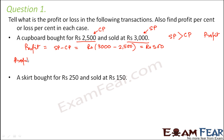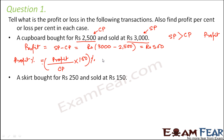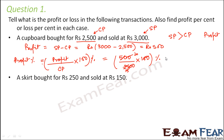Now if you want to calculate the profit percent, this would be equal to the actual profit over the cost price multiplied by 100%. So this gives 500 divided by 2500 into 100, which gives you 20. So the profit percentage is 20%.